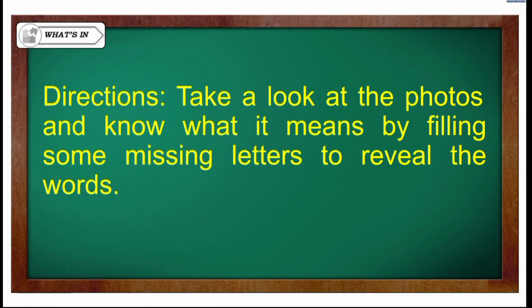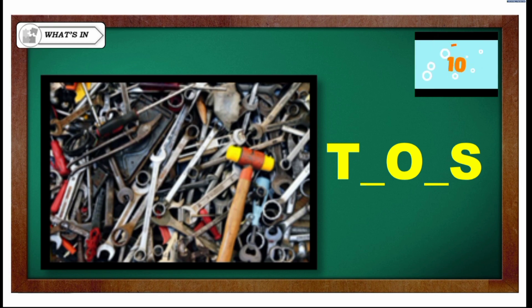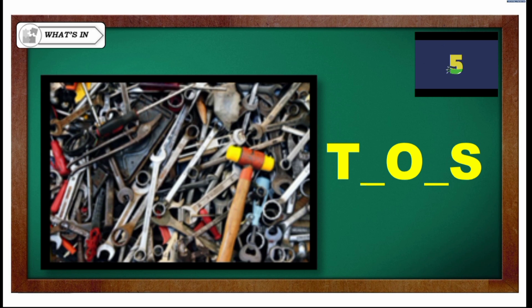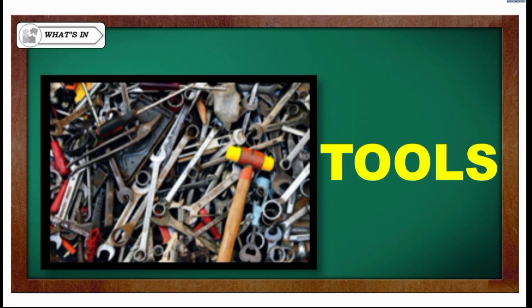Let's have first an activity. For the directions, take a look at the photo and identify what it means by filling in the missing letters to reveal the words. I am going to show you a photo and you will guess what it is. For the first one, I will give you 10 seconds. Can you identify it? The given letters are T, O, and S. The correct answer is 'tools.'